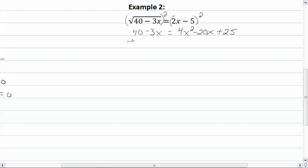Now move everything to one side. And we have 0 = 4x² - 17x - 15.